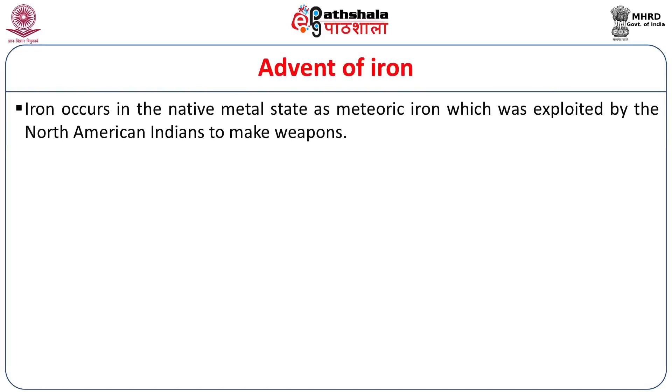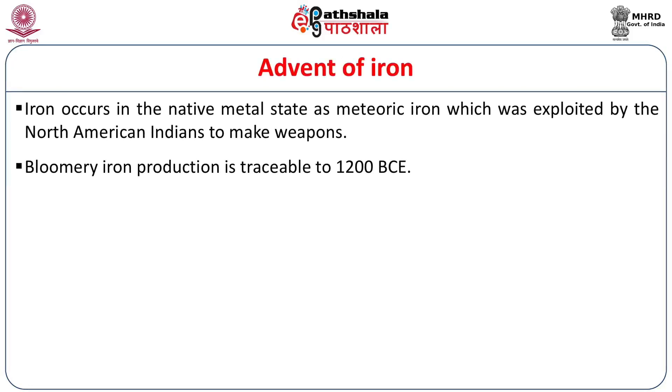The advent of iron was of course a very important development in early metallurgy, which changed the course of humankind. When copper and bronze tools were replaced by iron tools, it was much more efficient in terms of agricultural processes and also for expansion of empires and warfare. It is interesting that iron occurs in the native metal state as meteoric iron, and meteoric iron has also been used by various civilizations. The North American Indians used meteoric iron to make weapons, and it is also thought that some of the very early iron used in Egypt was of meteoric origin. The production of bloomery iron is traceable to about 1200 BCE.